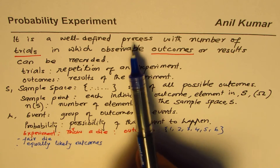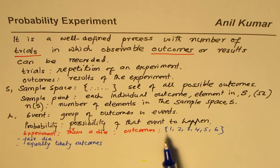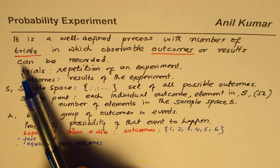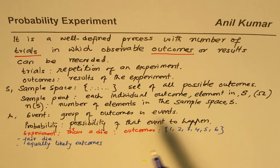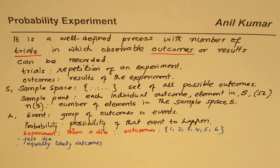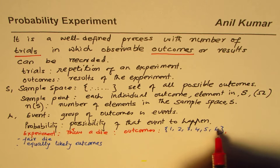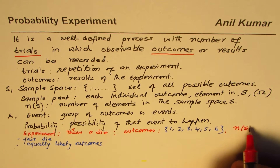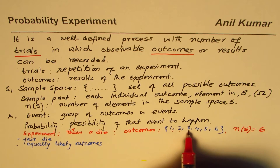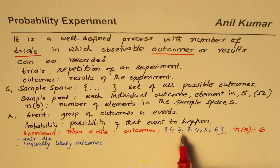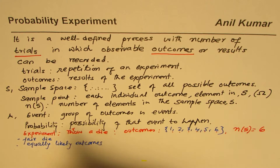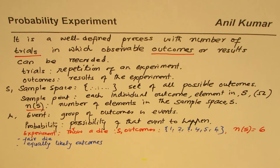This process of throwing the die could be done a hundred times, two hundred times, maybe twenty or fifty times — those are the trials, the number of times you perform the experiment. Whenever you throw a die you could get a number between one and six inclusive. These become the total number of outcomes — we call them the sample space S. The number of elements in the sample space is six.